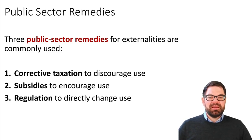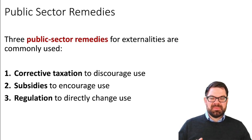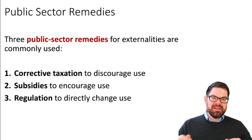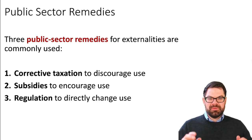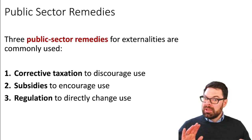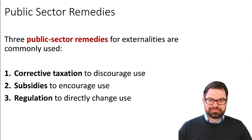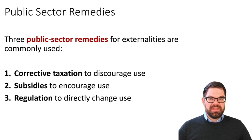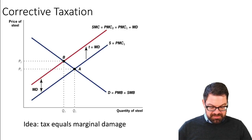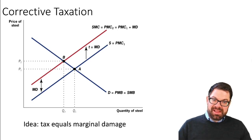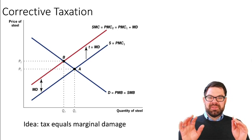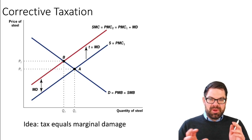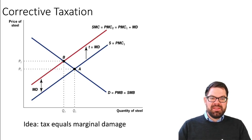We will mainly talk in this course about the other two tools, because regulation is often both an economic and a legal problem. If you take a course in environmental economics, you'll hear a lot about optimal regulation. Here we will focus mainly on taxation and subsidy — mainly taxes. So we go back to the example of the steelworks and the fishery, whereby the steelworks pollute the water and the fishery has to pay for depolluting.